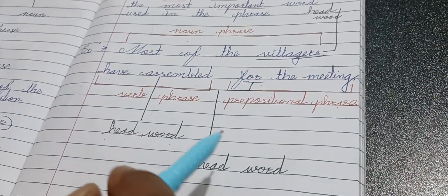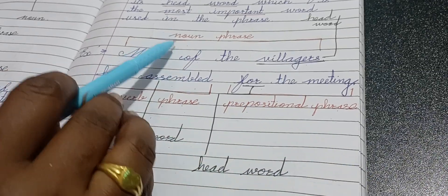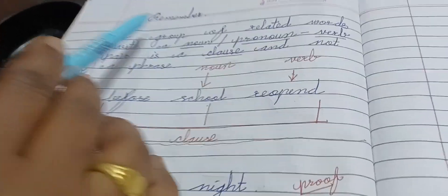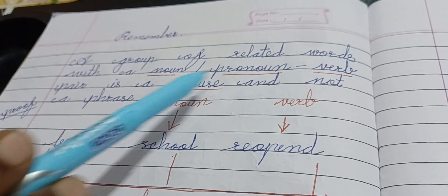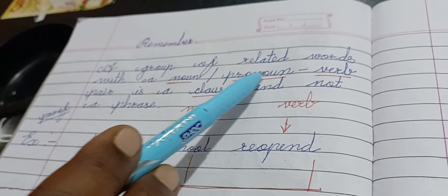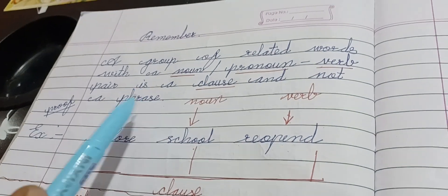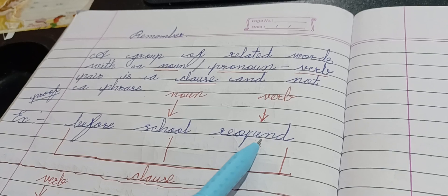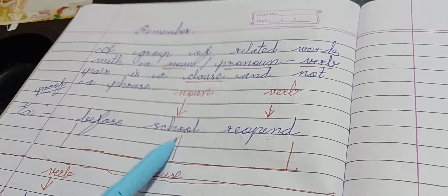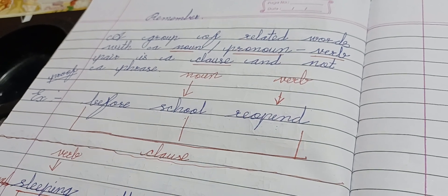We see three phrases in that one example. These are the kinds of phrases: noun phrase, verb phrase, and prepositional phrase. Remember this important point: a group of related words with a noun-verb pair is a clause, not a phrase. For example, 'before school reopened' — here 'school' is the noun and 'reopened' is the verb, so it is a clause.